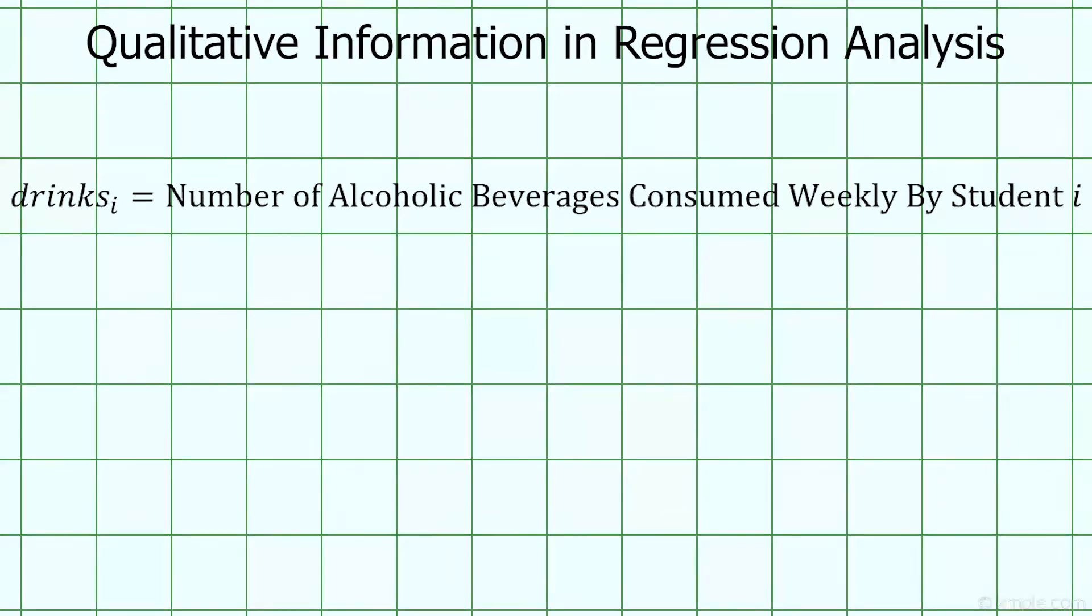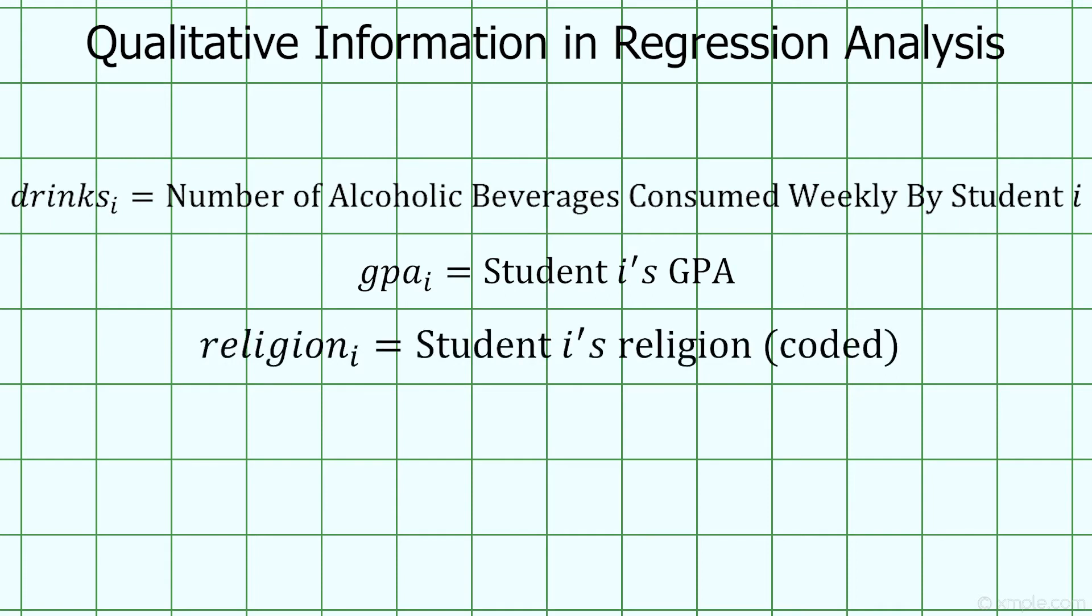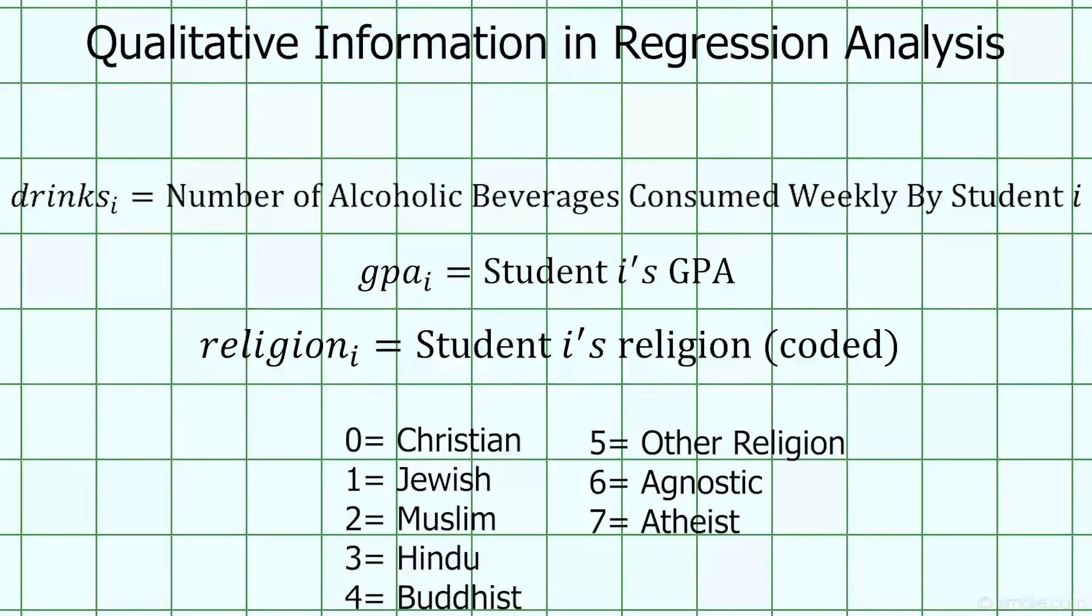What if we have a categorical variable that has multiple values? For example, we have survey data from 1400 college students. This variable tells us the number of alcoholic beverages that the respondent consumes in a typical week. This variable tells us the respondent's GPA. And this variable is categorical. It's the respondent's religion, coded so that its values are numerical. So, zero is Christian, one is Jewish, two is Muslim, three is Hindu, four is Buddhist, five is other religion, six is agnostic, and seven is atheists.